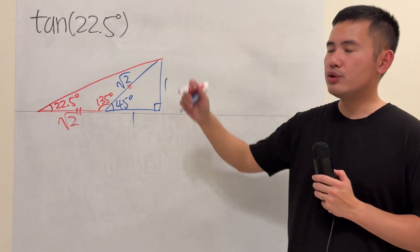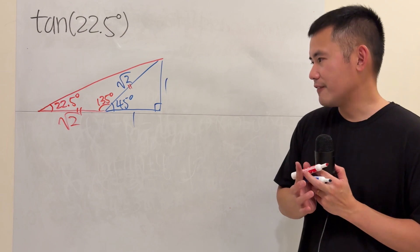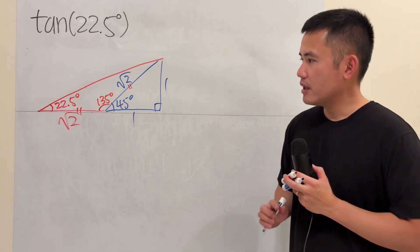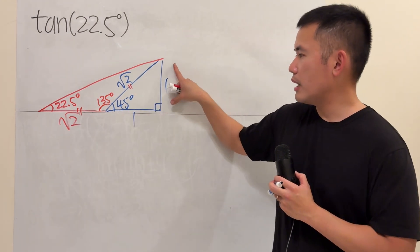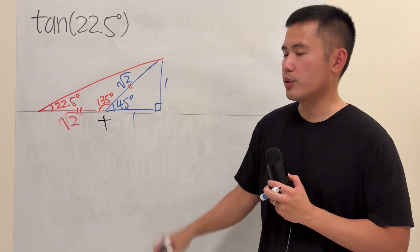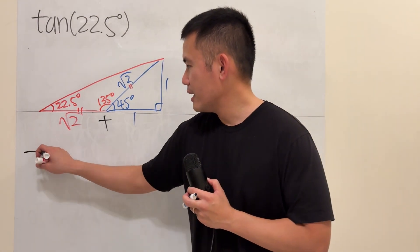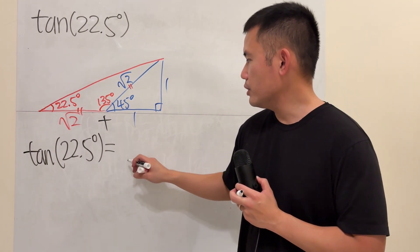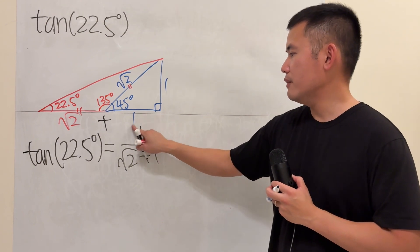And do we see tangent of 22.5 degrees already? Yes. It's very nice, isn't it? Yes. Here. Look at the big triangle. Opposite over adjacent. The whole adjacent is just 1 plus square root of 2. It's really backwards. But anyways, I can say tangent of 22.5 degrees is just 1 over square root of 2 plus 1. Very nice.